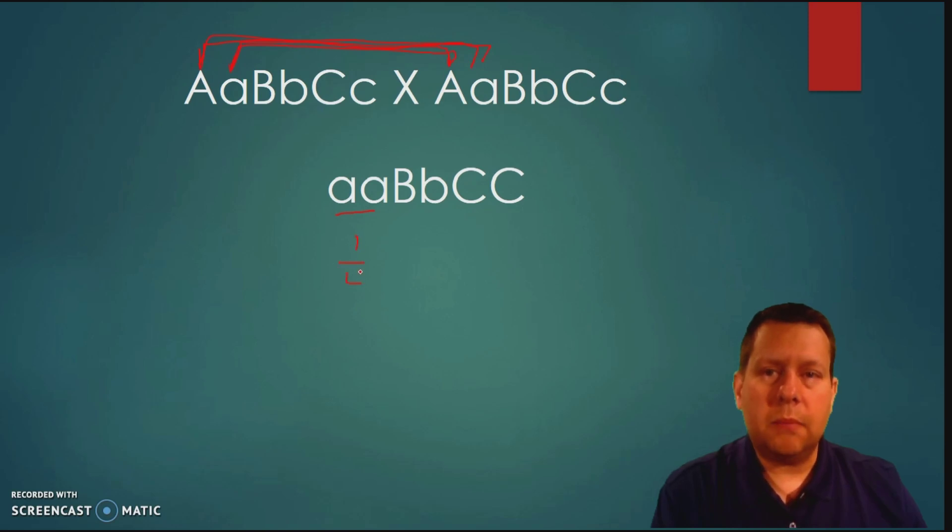We're going to multiply it by the chance of b. We need big b little b. So this doesn't work. But this one does. This one does. But this does not. So we had a two out of four chance and two fourths is reduced to one half.